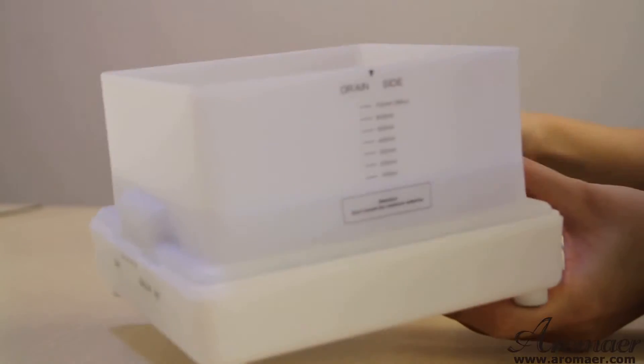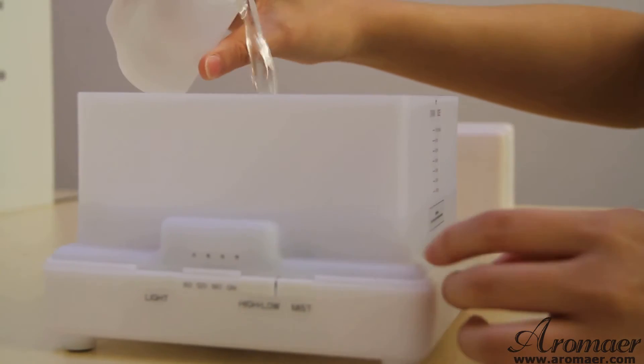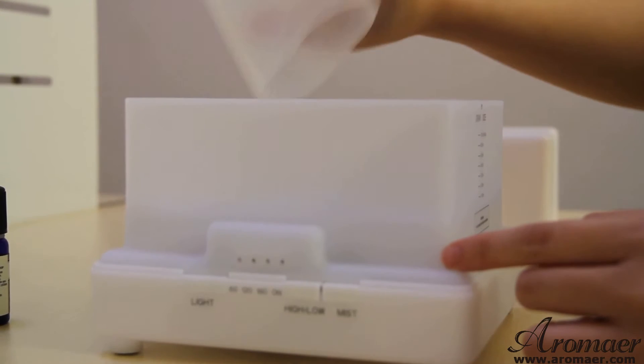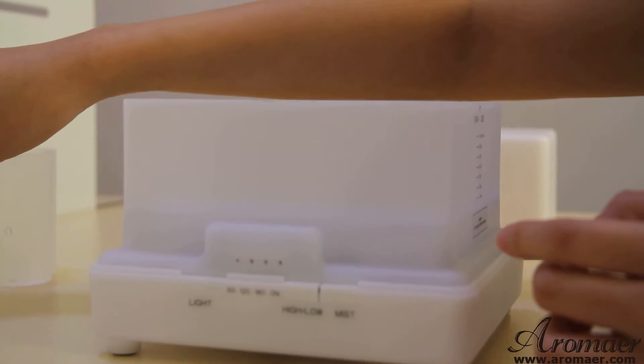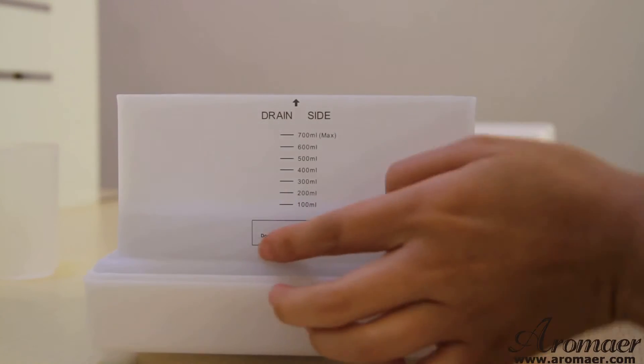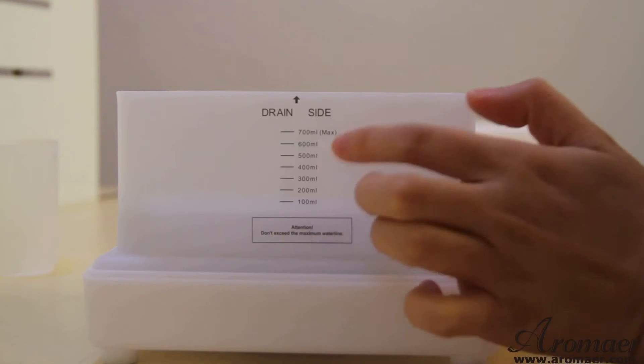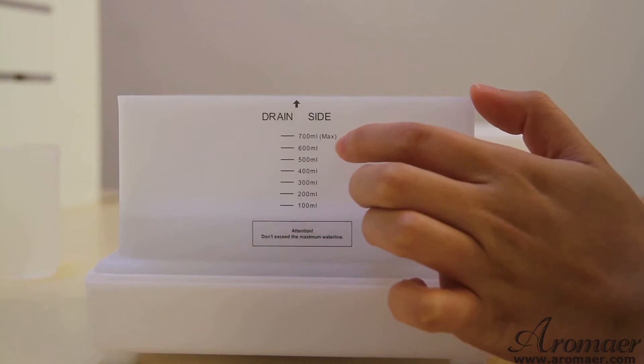And now I'm going to add water into it. Like this, add water into it. And if you'd like, you can add several drops of the essential oil. One thing I need to tell you is that the container is up to 700ml.